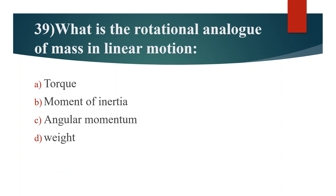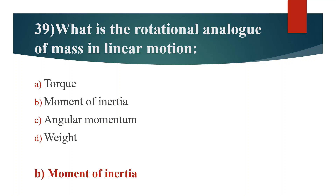Thirty-ninth question. What is the rotational analog of mass in linear motion? Option A: Torque. Option B: Moment of inertia. Option C: Angular momentum. Option D: Weight. Answer is Option B: Moment of inertia.